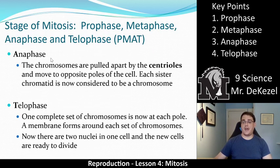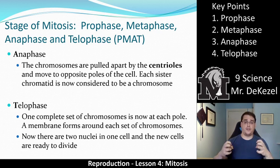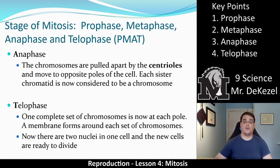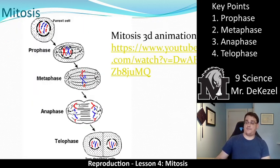Maybe hit pause so that you can write this down. Anaphase is the part where the chromosomes are being pulled apart. The centrioles pull on them until they break in half. The chromosomes are pulled apart by the centrioles and move to opposite poles of the cell. Each sister chromatid — that's half of the chromosome — is now considered to be a chromosome all on its own, because it's going to separate completely. In anaphase, the X's have split in half, with one part going to each end, and the spindle fibers are shortening.